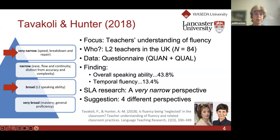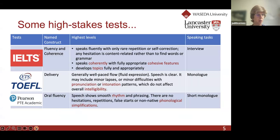Building on their in-depth analysis of the questionnaire data, Tavakoli and Hunter proposed four different perspectives on fluency, from very broad at the bottom to the very narrow at the top. You can now see how these definitions vary in width of scope from broad to narrow, and how this is actually represented in high-stakes tests.